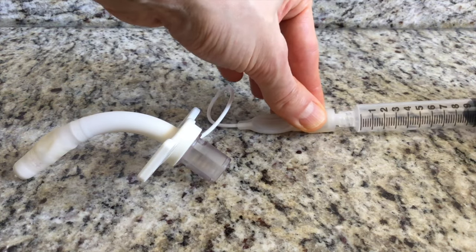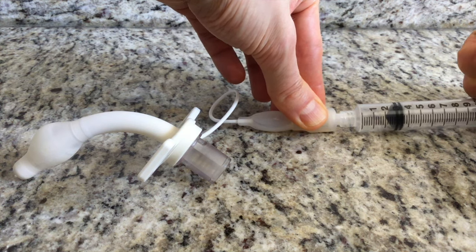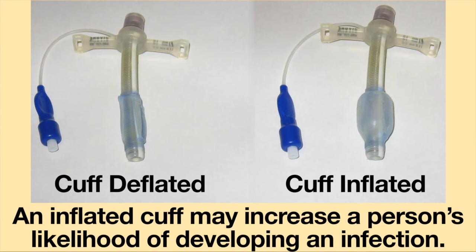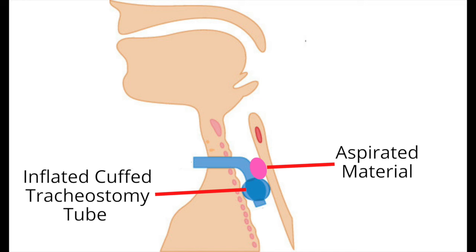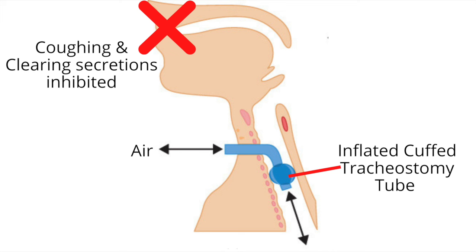Some individuals with a tracheostomy tube have a cuff, which may need to be inflated. An inflated cuff may increase a person's likelihood of developing an infection. If the person aspirates, the contents pool around the inflated cuff. If the cuff is not deflated frequently, the pooled contents can become a breeding ground for an infection. Additionally, an inflated cuff inhibits a person's ability to cough and clear secretions.